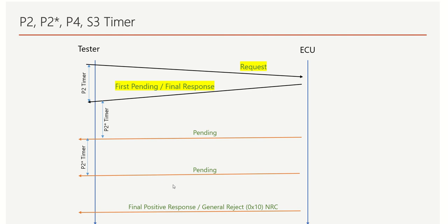Once all pending responses have been sent, there is a timer that defines the deadline by which we must have a final positive response — that is called the P4 timer, also known as a performance timer. If we are not able to send the positive response within that time, we need to send NRC 0x10, which is a general reject. Within the P4 timer, the final response must be sent.